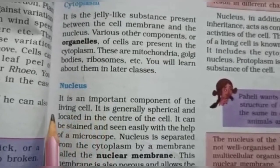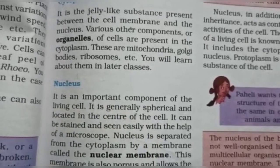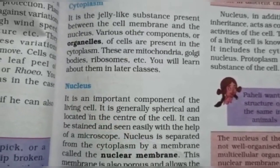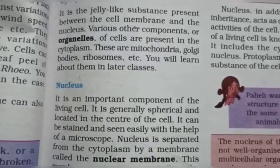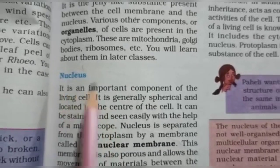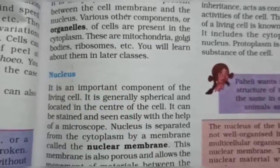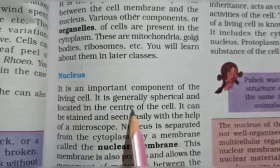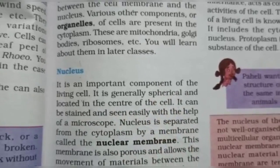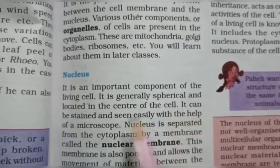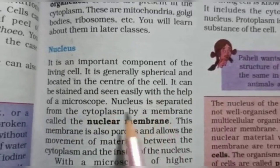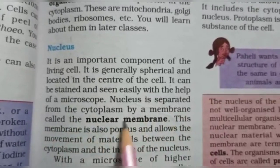Next is the nucleus. It is the most important component of the living cell. Just like the heart is the most important part of the human body, the nucleus is the most important part of the cell. It is generally spherical and located in the center of the cell. It can be stained and seen easily with the help of a microscope. The nucleus is separated from the cytoplasm by a membrane called the nuclear membrane.